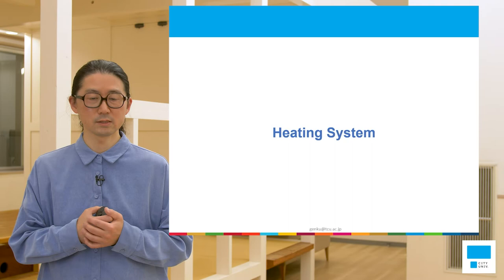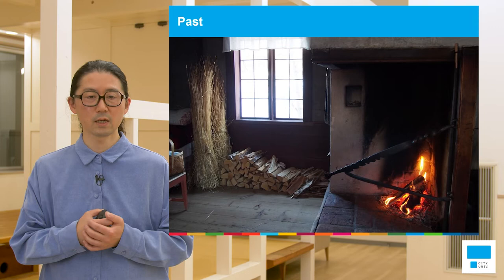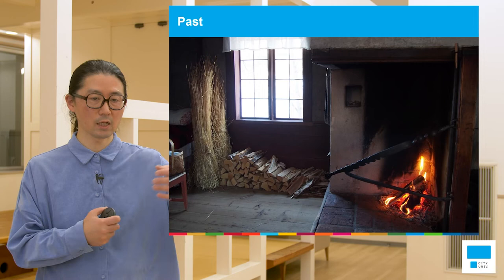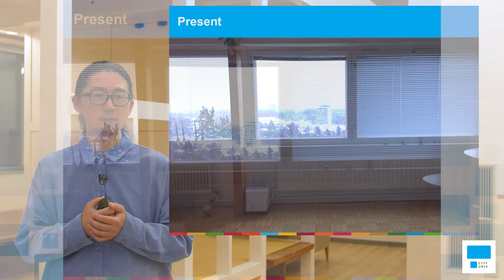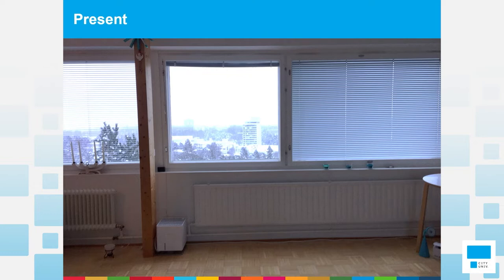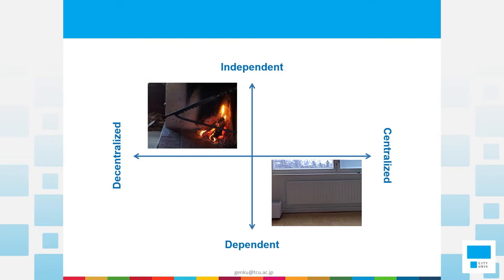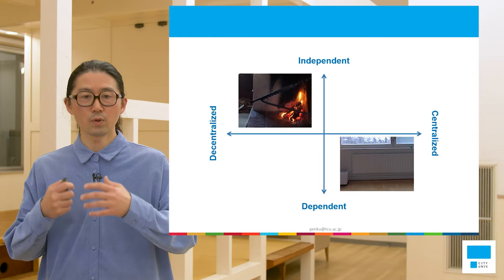Another example is heating systems. In the past, the fire spot in the house was like this and the source of fire was wooden pieces, collected from the surroundings by themselves. Little by little this heating system was developed. Now the heating system is like this — this example is from Finland, where radiation panels are located under the windows and heat is supplied from those panels. This diagram shows that the heating system with the panels is based on centralized heating systems.